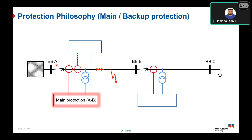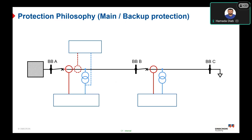If the main protection fails, the backup protection should operate after a time delay to trip circuit breaker A and isolate the fault. This achieves a redundant protection system philosophy with main and backup protection working together.